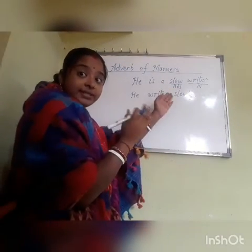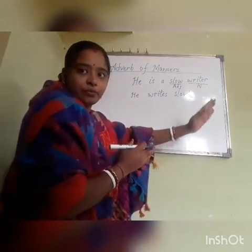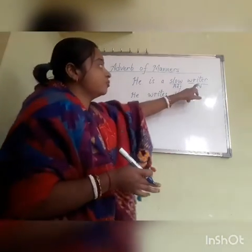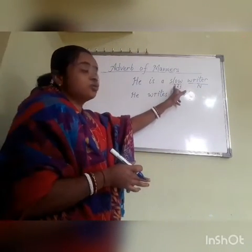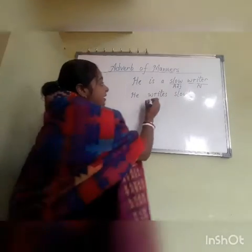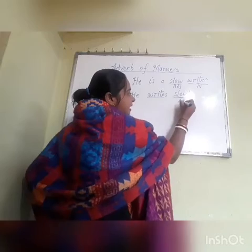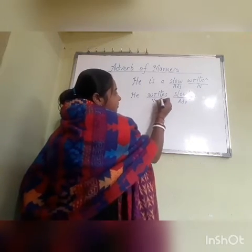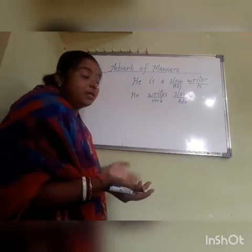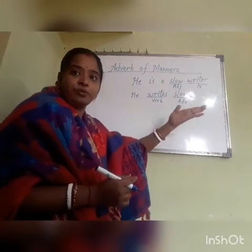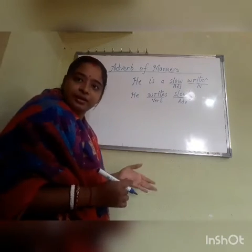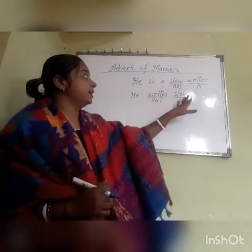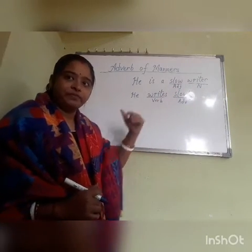This word 'slow' is an adjective used for the noun 'writer.' We already know that adjectives describe nouns or pronouns. But in the next sentence, 'He writes slowly,' the word 'slowly' is an adverb. We use it here because 'writes' is a verb, not a noun. We use adjectives for nouns or pronouns, and adverbs for verbs. So 'slow' is an adjective, but 'slowly' is an adverb.